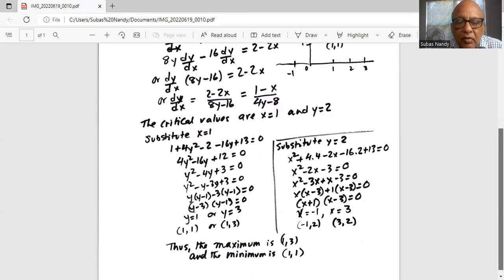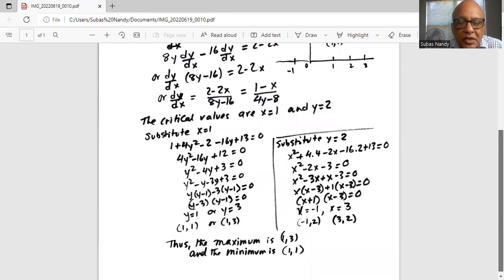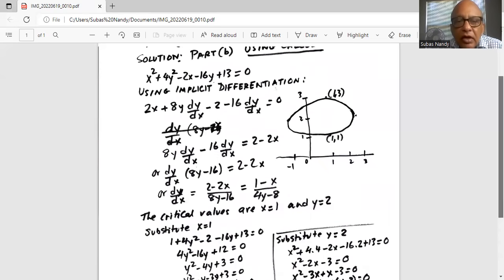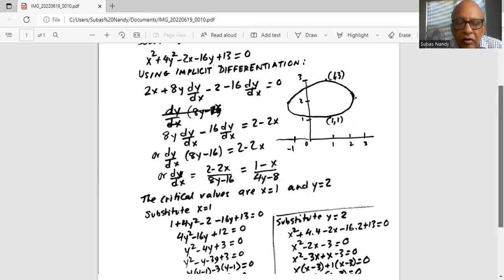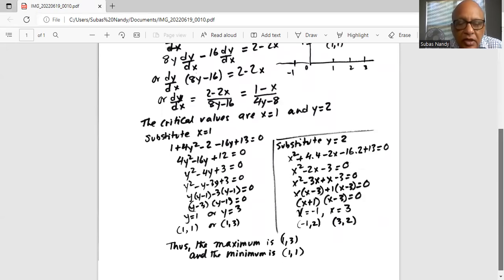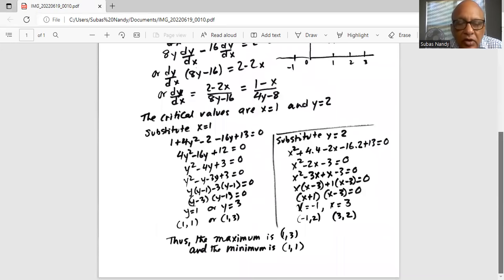So what is the maximum value? Maximum value is (1, 3) of this graph, of this elliptical curve I should say. And the minimum value is (1, 1) on this elliptical curve. This is the same information that we got when we solved it by algebra. So I'll stop here today.